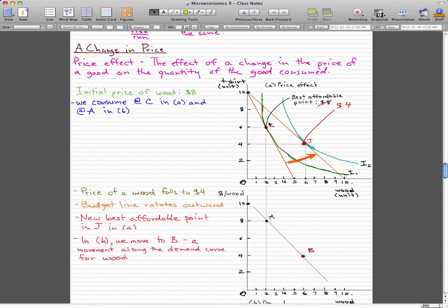This budget line rotated outward to meet this point J on the indifference curve. Essentially, this budget line is the tangent line for the indifference curve I2 at point J.